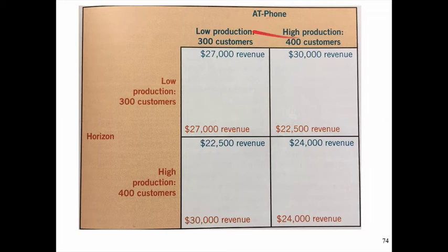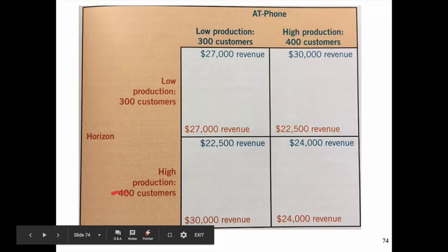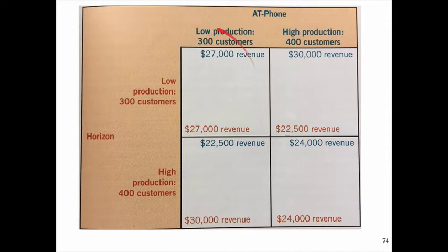Let's apply this to cell phone companies — call them Zain and Orange or AT&T and Verizon. The question is how many customers do we want? If both have a lower number of customers, they have the highest revenue. But if one company, say Zain, changes their customer base to 400 customers, they get more revenue and impact Orange. If Orange also tries for 400 customers, both lose out because they end up offering lower prices. The goal is to keep the equilibrium. But because firms always want the most profit possible, they'll try strategies that impact their revenue and hope the competitor doesn't notice or retaliate.